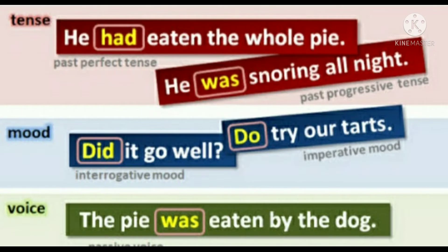Example one: 'He had eaten the food.' In this sentence, the auxiliary verb shows past perfect tense. Example two: 'Did it go well?' The auxiliary verb shows interrogative mood in this sentence. Example three: 'Do try our tarts.' In this sentence, the auxiliary verb shows imperative mood. Example four: 'The pie was eaten by the dog.' In this example, the auxiliary verb shows passive voice.